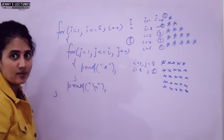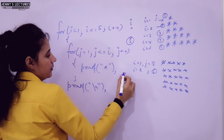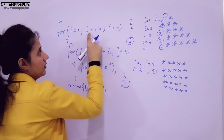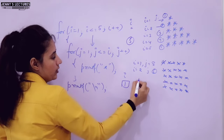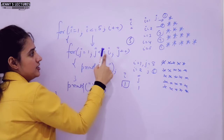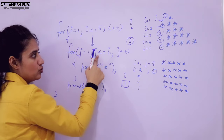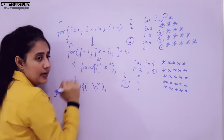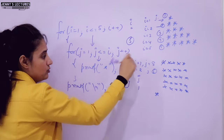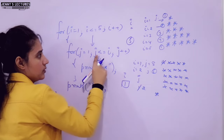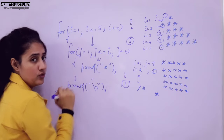Now let's dry run this program. i equals 1, i less than equal to 5 - condition is true, so control enters the outer loop. j equals 1, j less than equal to i, i is 1, so 1 less than equal to 1 - condition true. Control enters the inner loop and we print a star. j plus plus, j becomes 2. Is 2 less than equal to 1? No, so control goes out of the inner loop.